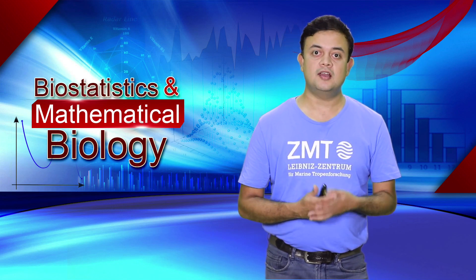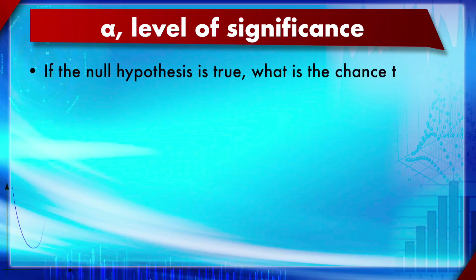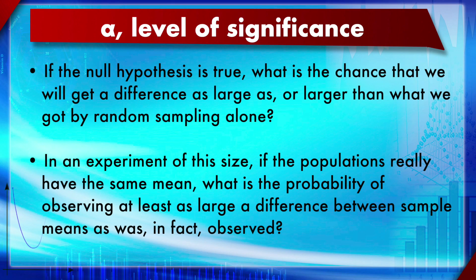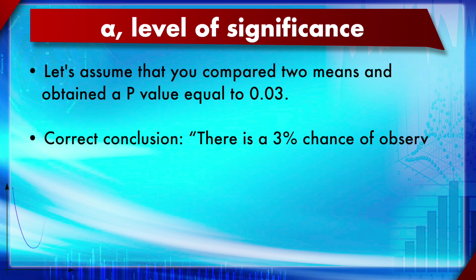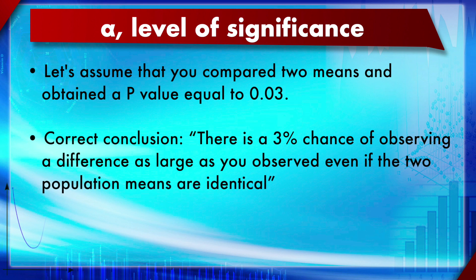Returning to the definition of p-value: if the null hypothesis is true, what is the chance we will get a difference as large as or larger than what we observed in an experiment of this size? For example, if you compare two means and obtain a p-value of 0.03, the correct conclusion is that there is a 3% chance of observing a difference as large as you observed, if the two population means are identical.